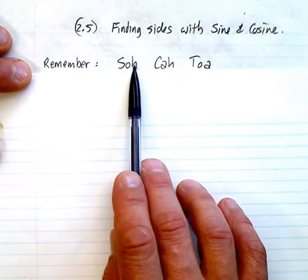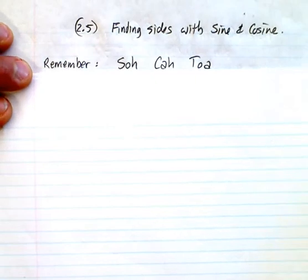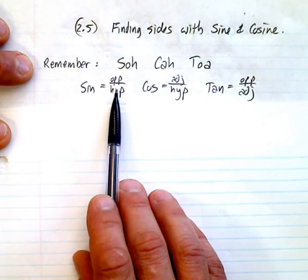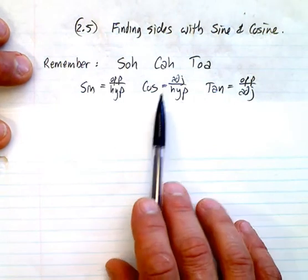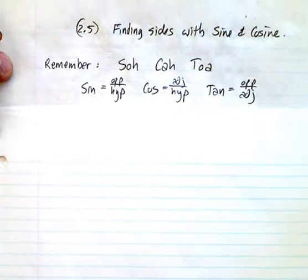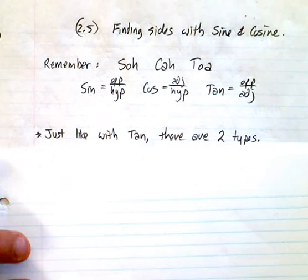Right, now this is what it means: your sine compares the opposite to the hypotenuse, your cosine compares the adjacent to the hypotenuse, and the tangent compares the opposite to the adjacent.